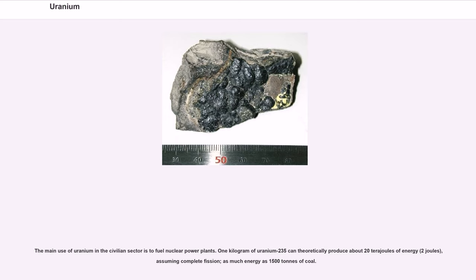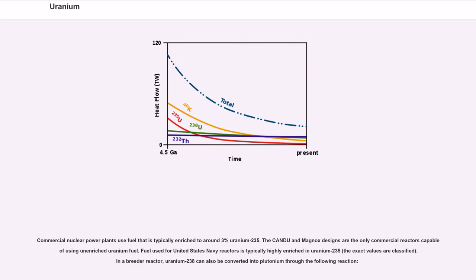The main use of uranium in the civilian sector is to fuel nuclear power plants. One kilogram of uranium-235 can theoretically produce about 20 terajoules of energy, assuming complete fission, as much energy as 1,500 tons of coal. Commercial nuclear power plants use fuel that is typically enriched to around 3% uranium-235. The CANDU and Magnox designs are the only commercial reactors capable of using unenriched uranium fuel. In a breeder reactor, uranium-238 can also be converted into plutonium through a nuclear reaction.